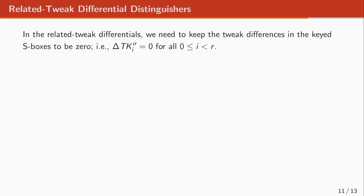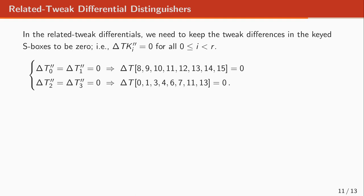Until this point we have discussed single-tweak differentials. To use related tweaks in the weak tweak key structure of CRAFT, we need to make sure that in the keyed S-boxes the tweak key difference is all equal to zero. Using this condition on all the rounds, we need the differences in these nibbles listed here to be zero. Therefore two nibbles of the tweak, namely nibbles at index two and five, are free to have a non-zero difference.